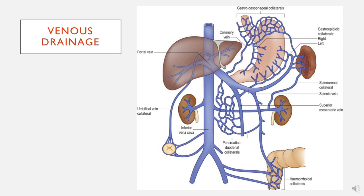This diagram illustrates essentially the venous drainage of the abdomen. It's not the most detailed, so it doesn't have everything on there, but it has some things that I'd like to illustrate. The first point is that most things in the abdomen drain via the portal vein — that's via the IMV, the splenic vein, and the SMV.